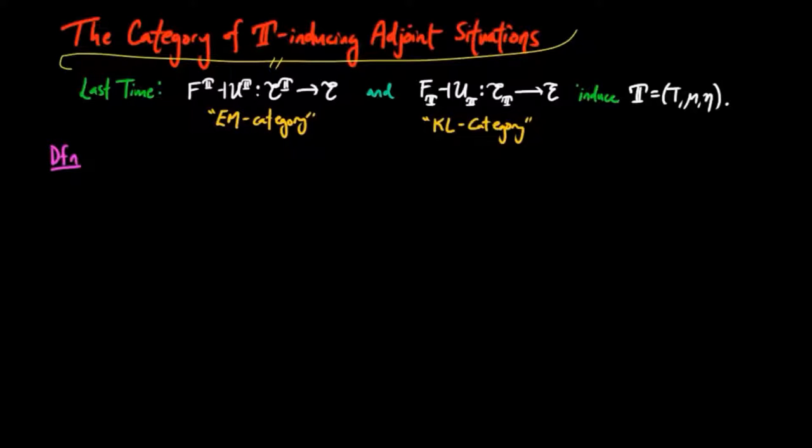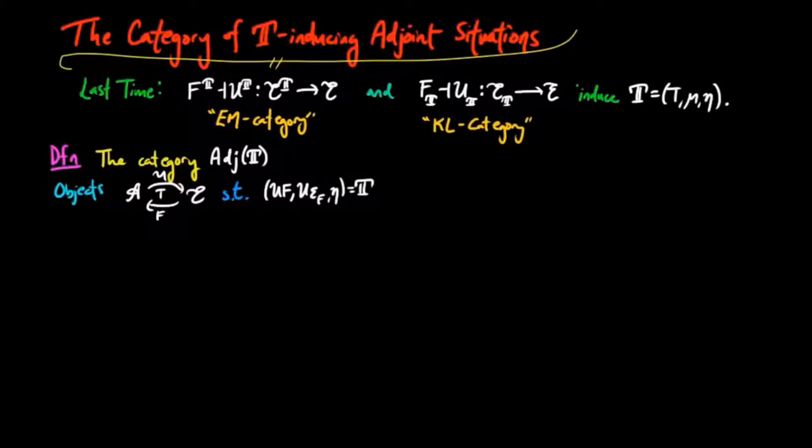The category of T-inducing adjoint situations, denoted Adj(T), has objects of adjoint situations inducing T. Note that the unit η is the same for each object, since the adjoint situation must induce the monad T.